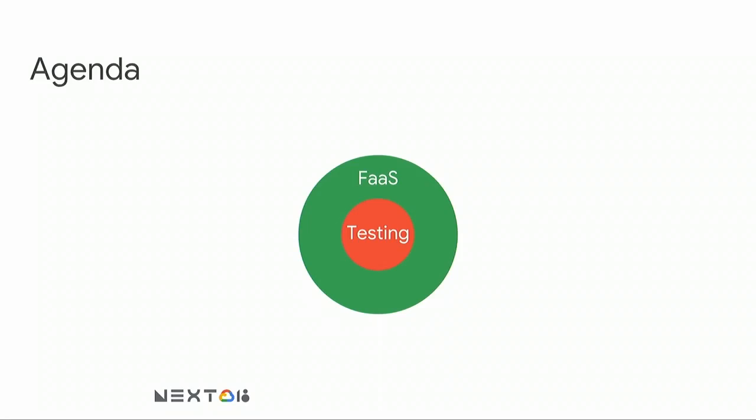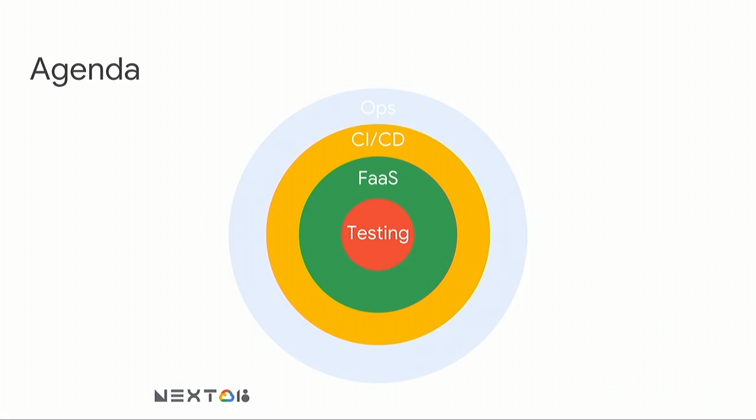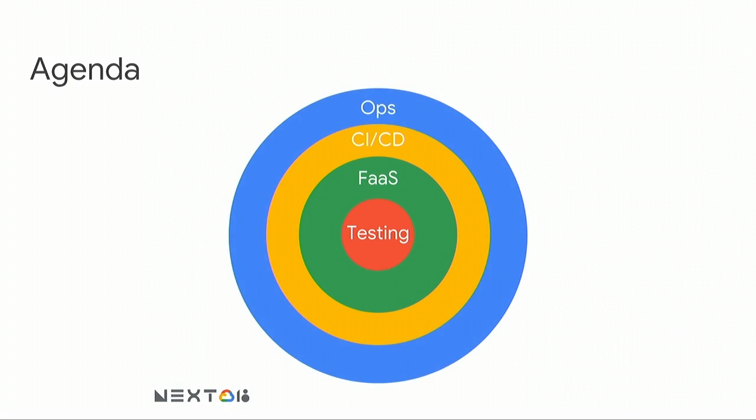Our agenda for today: first, we're going to talk about testing — what it is, how we do it, why we do it. Then we'll wrap that knowledge up in the world of functions as a service. Third, we'll talk about how to automate this process using CI/CD, or Continuous Integration and Deployment Platforms. And fourth, we'll talk a little bit about the operations of functions.